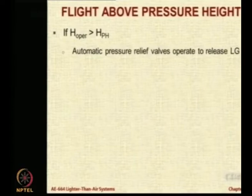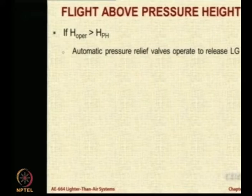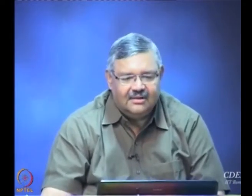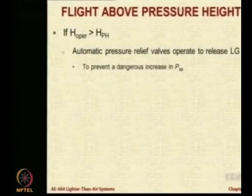So what happens in an airship is that there are automatic pressure relief valves. The gas wants to expand because the ambient pressure is falling and the envelope cannot take it — it will tear. So the best way is to allow the gas to expand by going out. There are pressure relief valves which are automatically primed at a particular delta P, and if for some reason the delta P becomes more than that, the lifting gas is released.